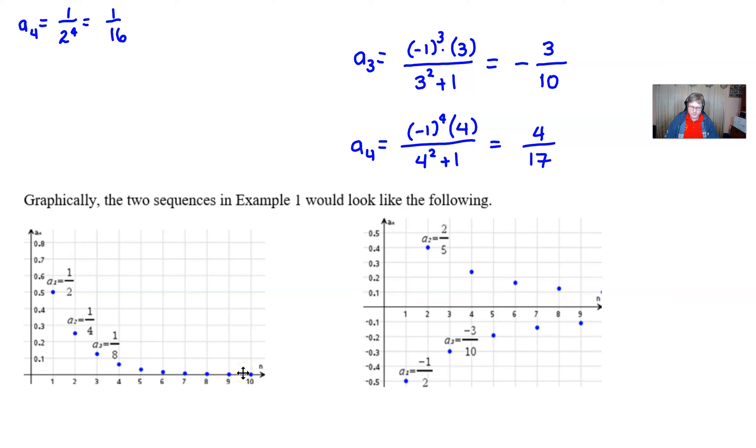Whereas the series that we just worked on that goes from negative half to positive 2 fifths to negative 3 tenths to, well, I don't have it listed, but I can tell you right now that point right there has the n value of 4 and it would have a y value of 4 seventeenths or an a sub n value of 4 seventeenths is probably just a little smidge bigger than 0.2, a little smaller, I should say, than 0.25, right? 4 sixteenths would be 0.25, so 4 seventeenths would be, I think, just a little bit smaller because it's got a bigger denominator.